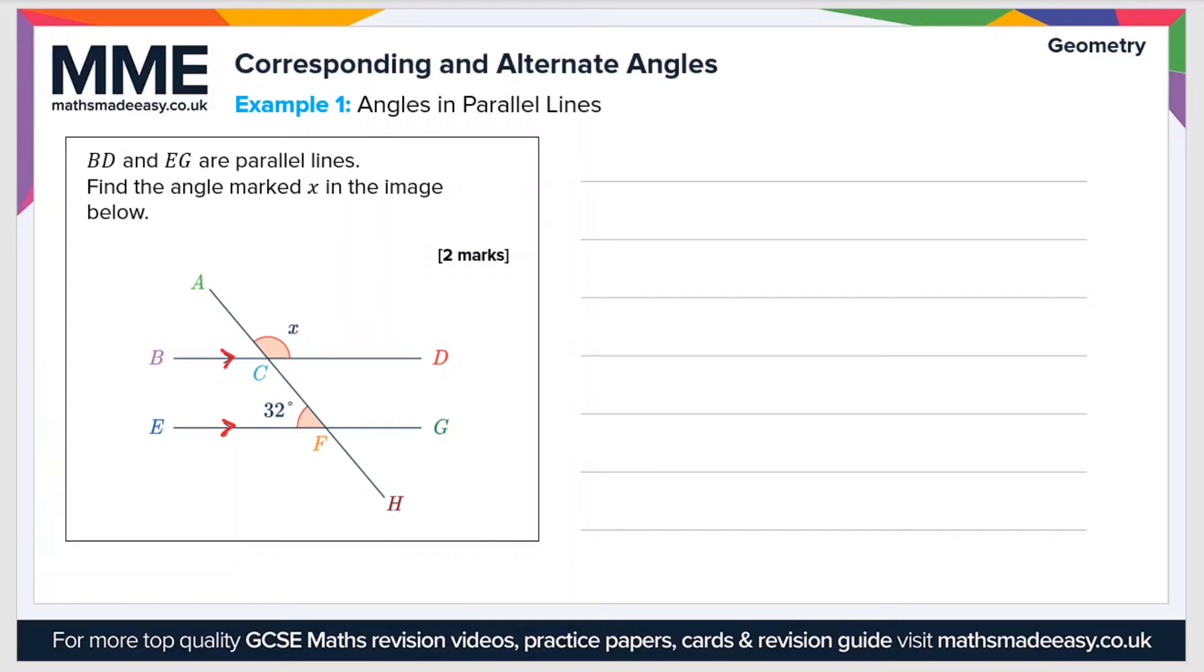This is quite a common type of exam question and there's always several ways you can do it. Here we're going to use the rules that we've just covered. First of all we can see that C and this 32 degrees are co-interior or allied angles.